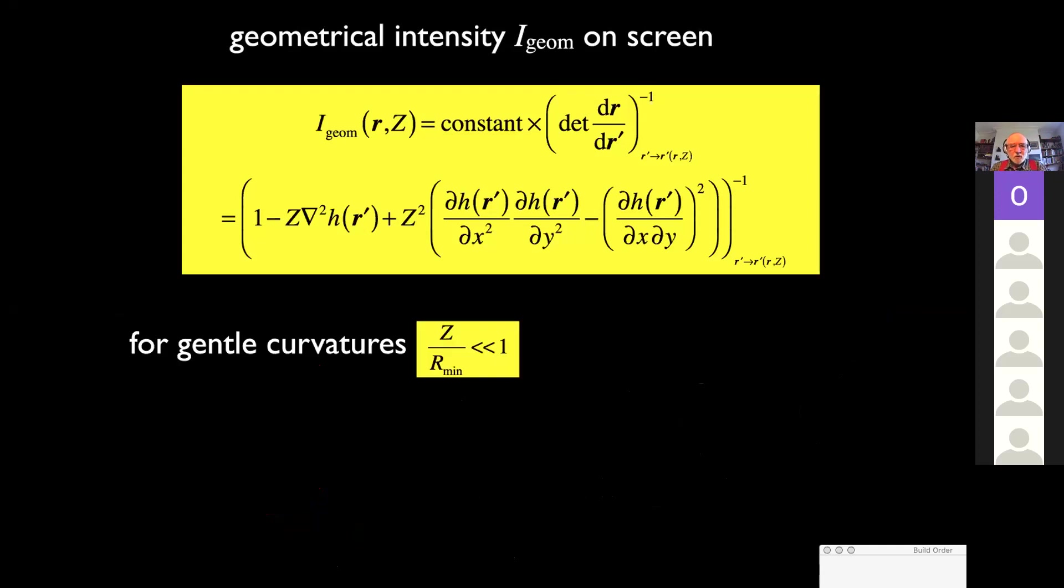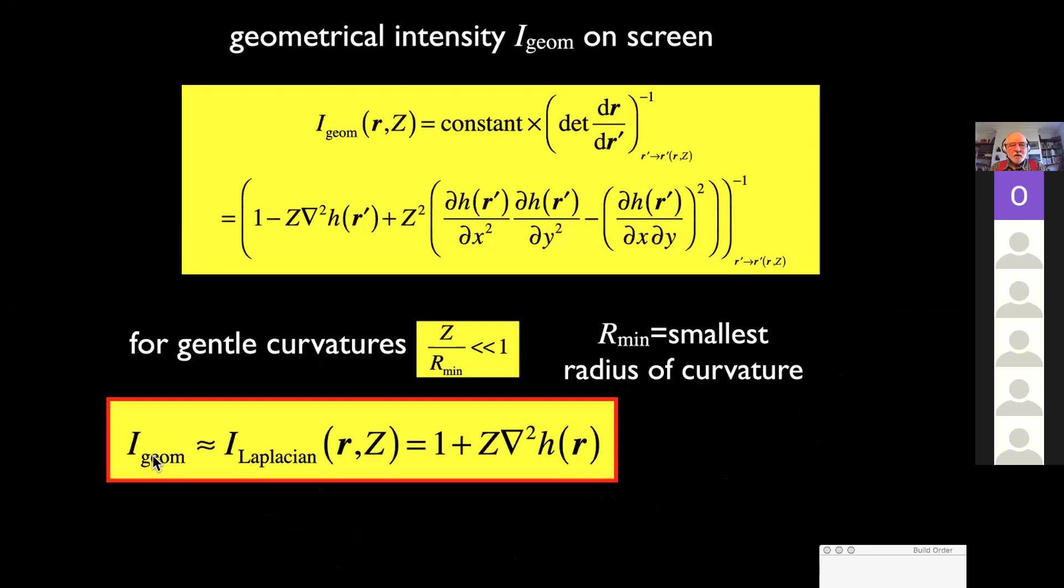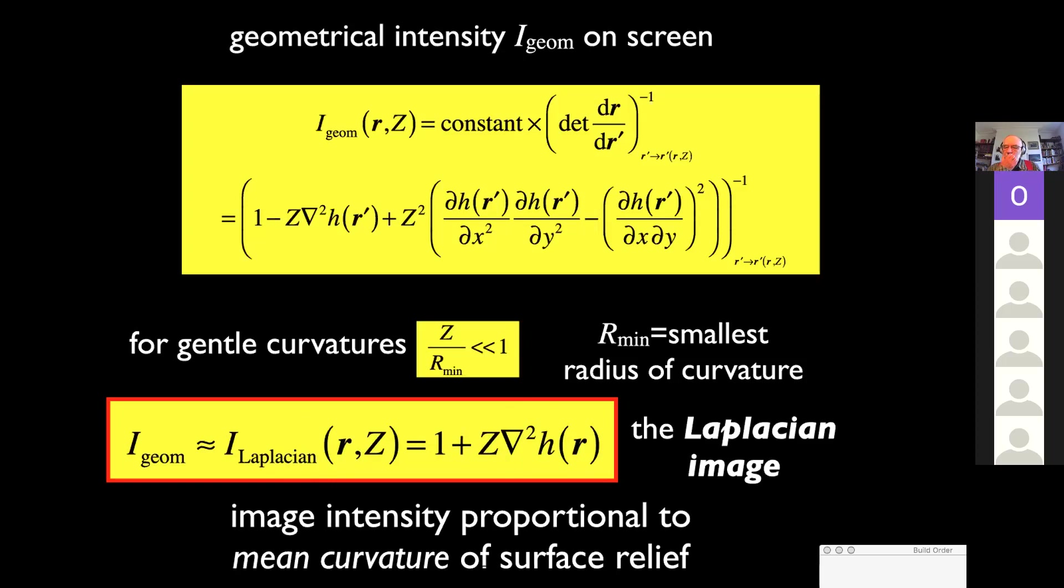So the geometrical intensity on the screen, you can calculate it mathematically, but in the relevant regime, this simplifies enormously for gentle curvatures where the smallest radius of curvature is much far greater than the distance of the screen that you're looking at. So the geometrical optics image is very close to what I call the Laplacian image. The intensity is one, if it were a perfectly flat mirror, plus distance times the Laplacian. So I call this the Laplacian image of the height. It's simply the curvature, the mean curvature of the surface. It's reasonable. It's a concentration of light caused by curvature.